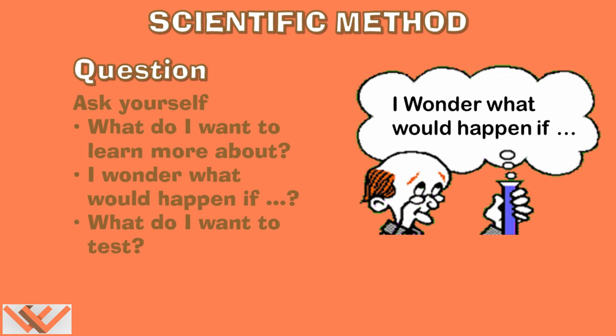So the first step within the scientific method is ask a question. I'm curious by nature. I want to, I'm looking at things, I'm wondering what's going on with that? How did that happen? I want to discover that cause and effect relationship in my area of interest, whether it be agriculture, with mammals, with people, with chemicals, or just how things work. So part of that question is asking yourself, what do I want to learn more about? I wonder what would happen if I did this? Or what do I want to test? Those are some very basic questions for the first step.